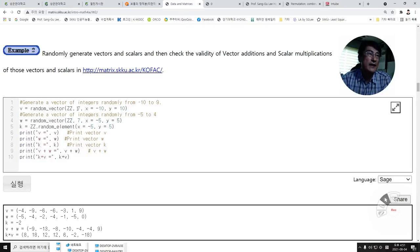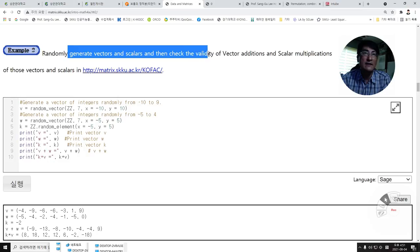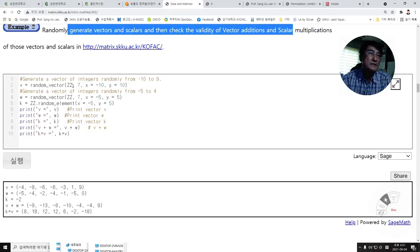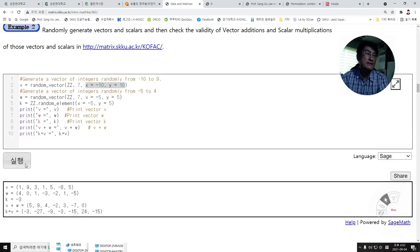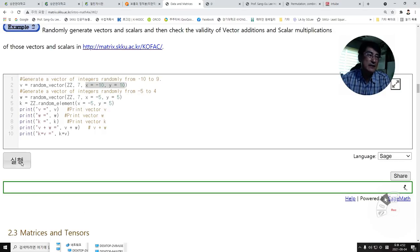Let's try randomly generated vectors and scalars. Check the validity of vector addition and scalar multiplication. Here, randomly generate a vector of dimension 7 and scalars from -10 to 9. Let's do the computations. If you do those things, then we will see it works.